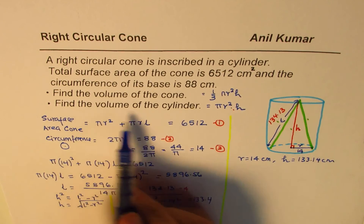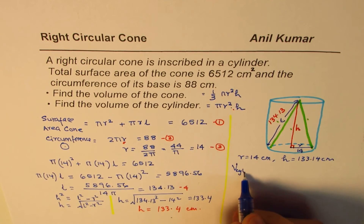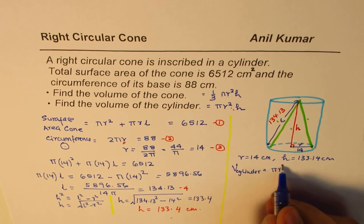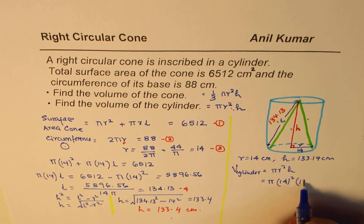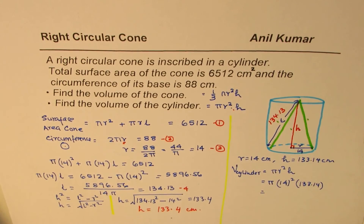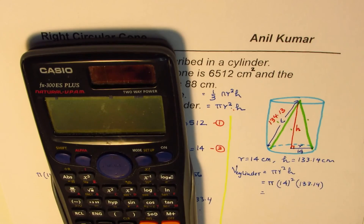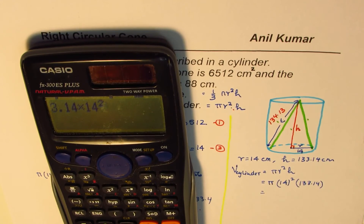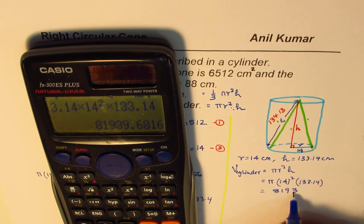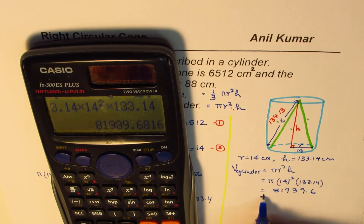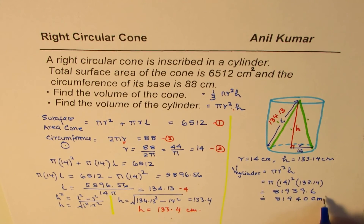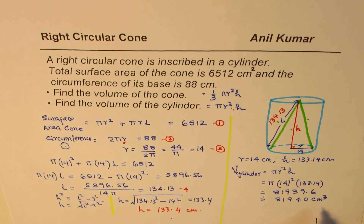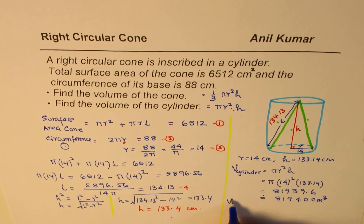Let's find the volume of the cylinder first. Volume of cylinder = π r² h = 3.14 × 14² × 133.4. Multiplying these gives approximately 81,940 cm³. So the volume of the cylinder is 81,940 cubic centimeters. You could always convert that to liters.